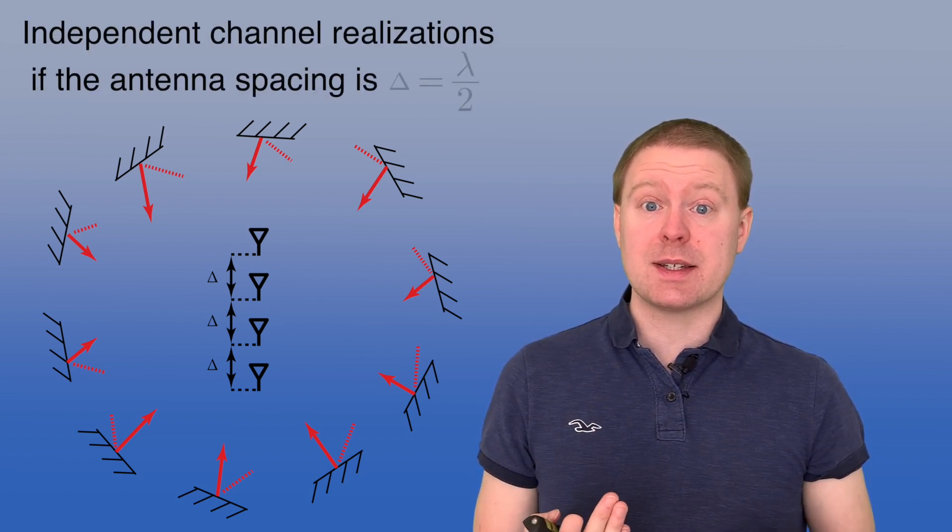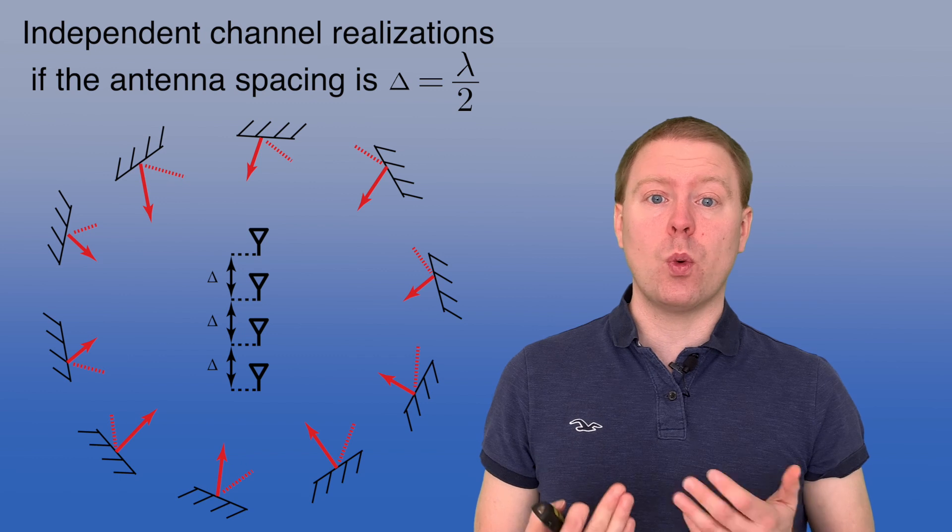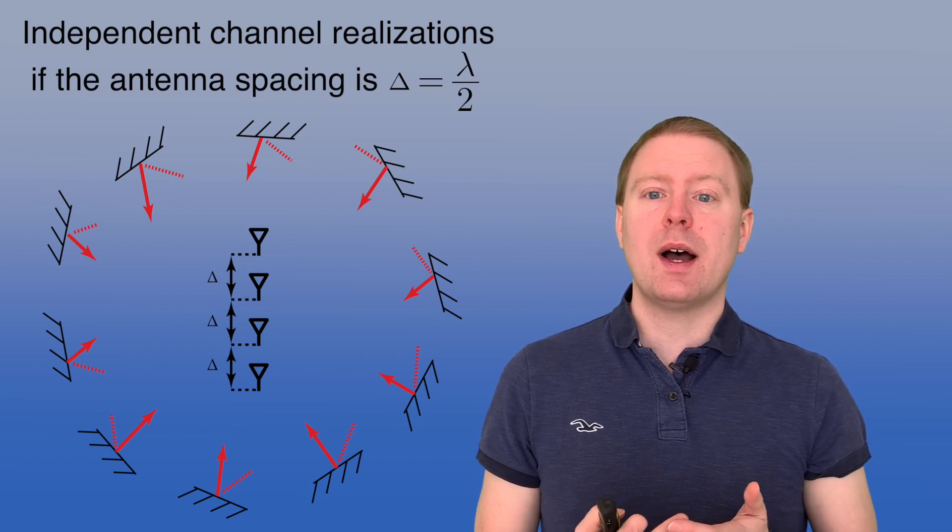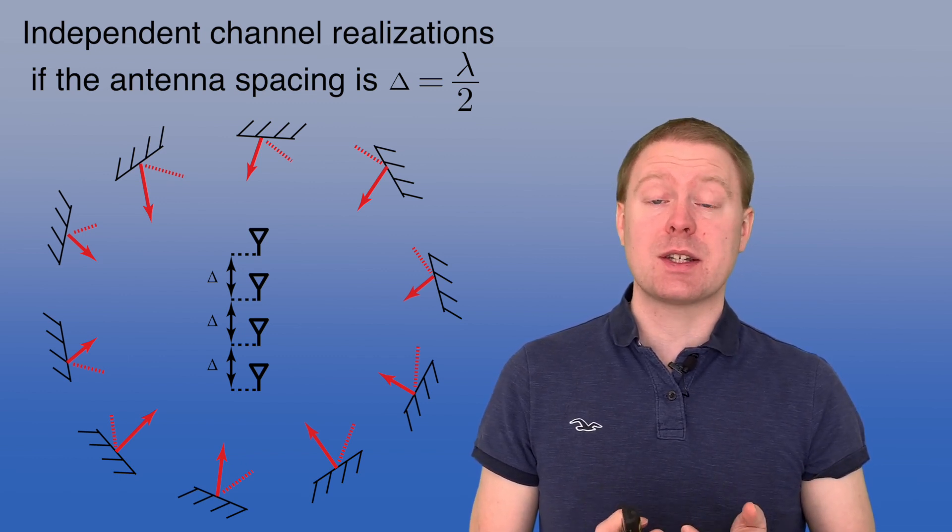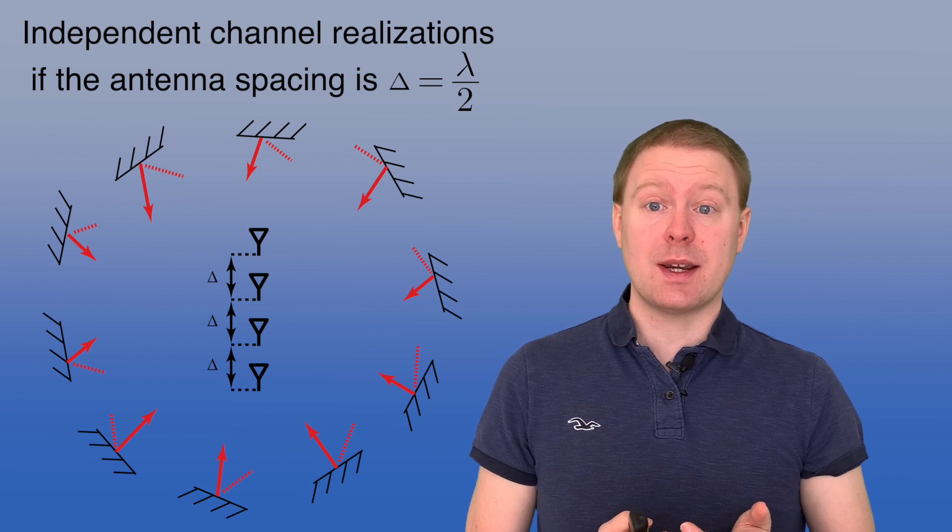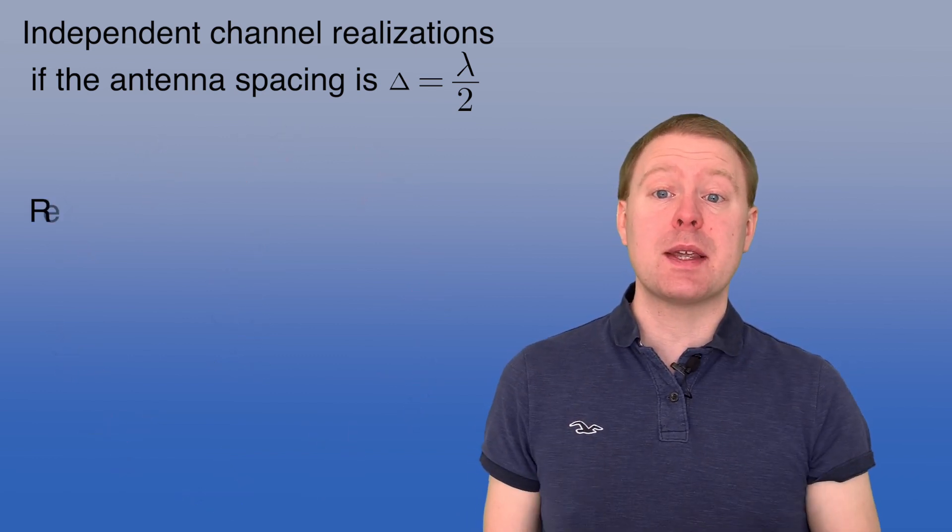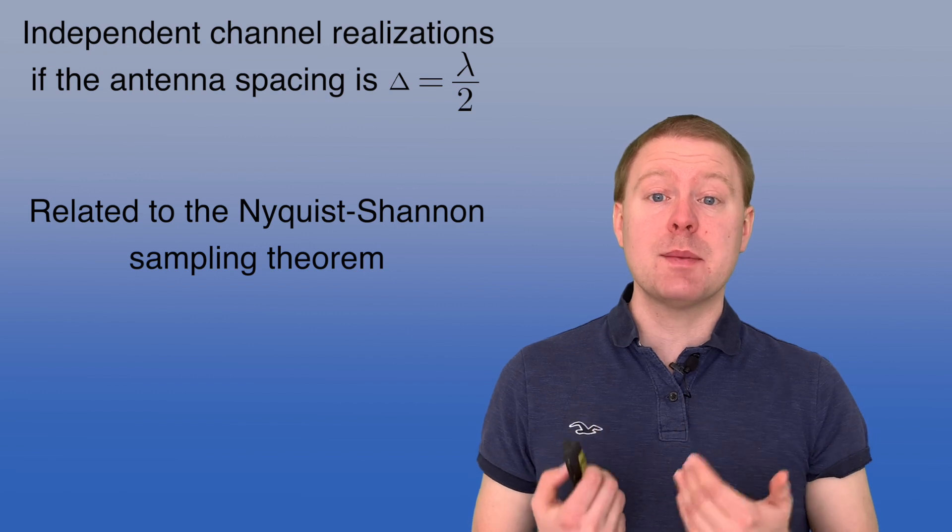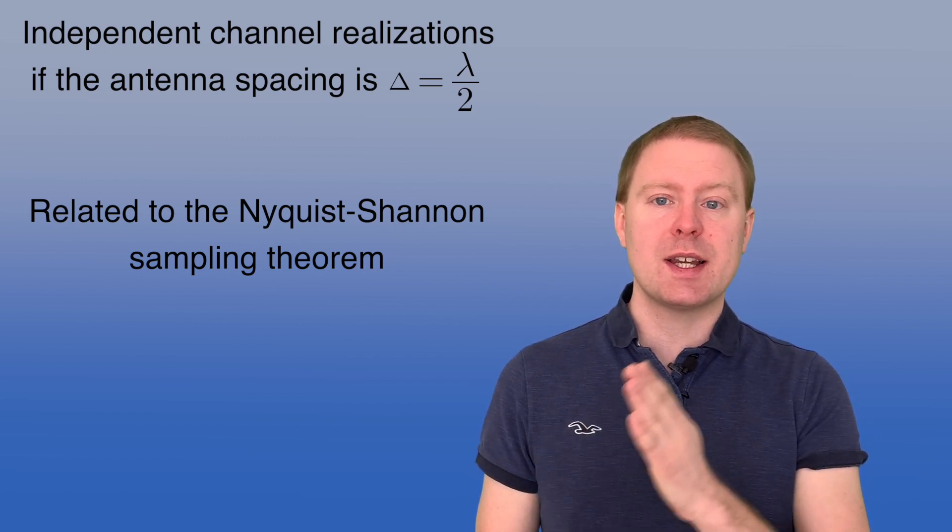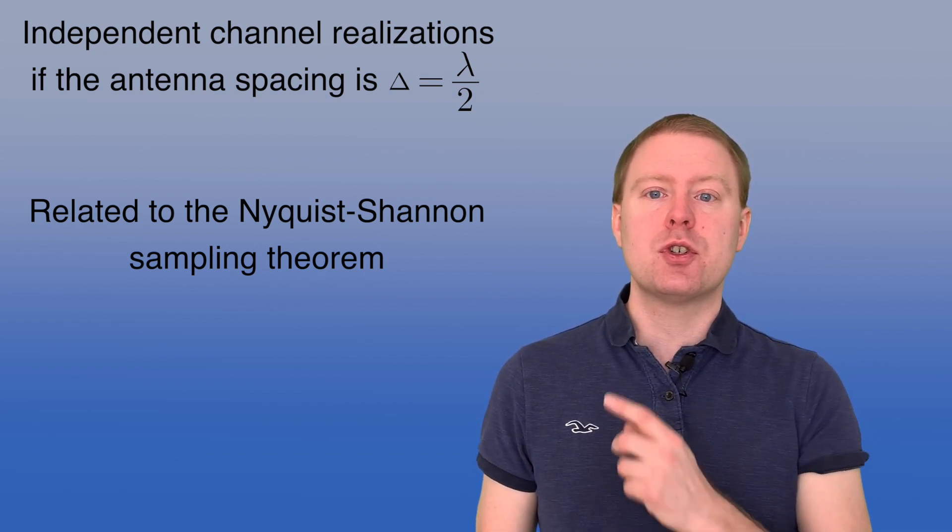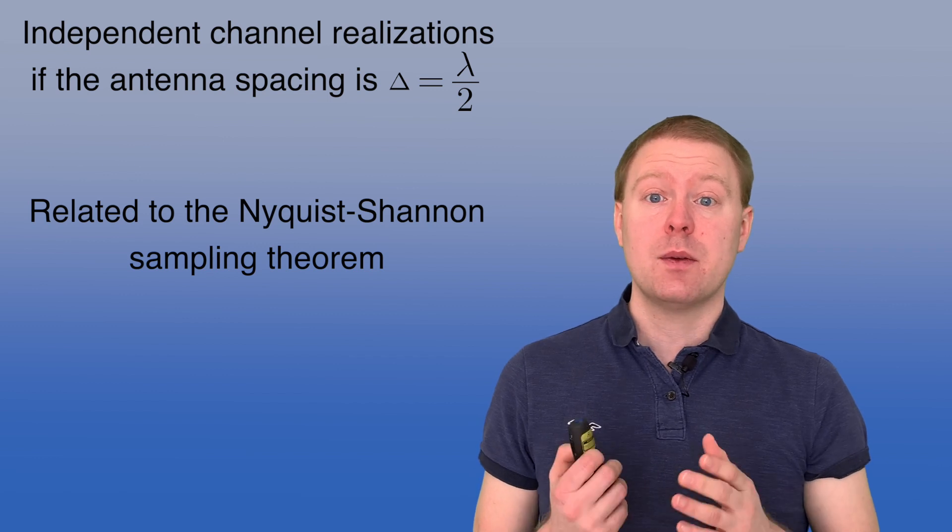However, will their random distributions be independent or not? Well, one can show that it's only happening when the antenna spacing is λ/2, or an integer times that. So that's why half wavelength antenna spacing is very important in wireless communications. This is like the sampling theorem in space. So just as a time signal doesn't have to be sampled more than twice per period, it's enough to put up two antennas per wavelength when we are sampling something here with the antennas.